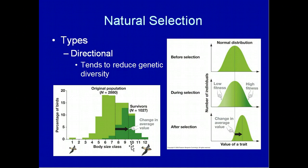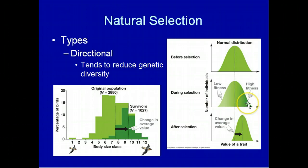In directional selection, you have a normal distribution of phenotypes and genotypes before a selective event. During selection, there's higher fitness for individuals of a particular phenotype and genotype. After the selection event, the average value of the trait in the next generation is shifted in one direction — in this case, shifted to the right to increase body size. The change can also be a shift in the other direction as well.